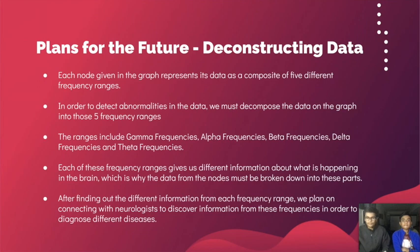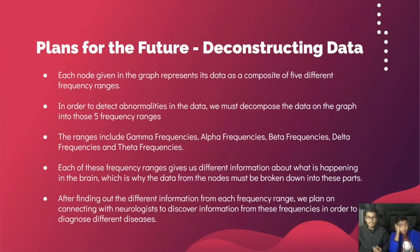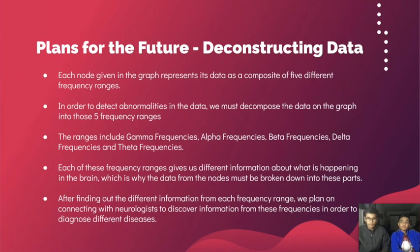Now let's talk about our plans for the future. We would first like to deconstruct the data in a much better way to detect abnormalities in the brain. The data we're currently getting is a single line, but that line is actually made up of five different frequencies: gamma, alpha, beta, delta, and theta. Those five frequencies can help detect abnormalities in the data, which will help in detecting abnormalities in the brain. After finding this information from each frequency range, we plan on connecting with neurologists to diagnose different diseases in a much more efficient way.